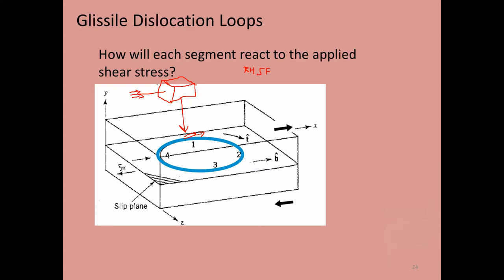Let's say I choose to start here. Applying the right-hand rule — my thumb is pointing along the tangent vector, into the volume — I need to walk around clockwise. When I come back, the Burgers vector connects from start to finish.